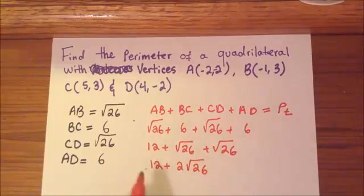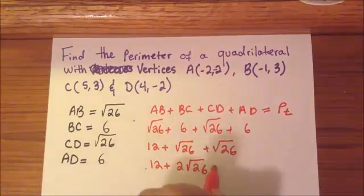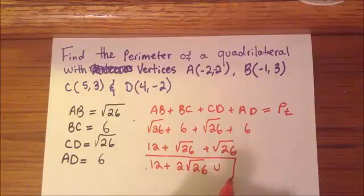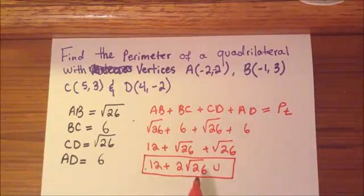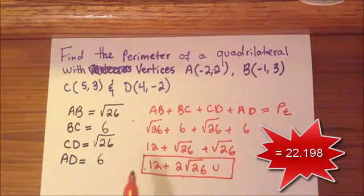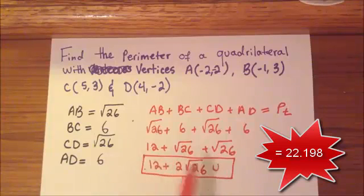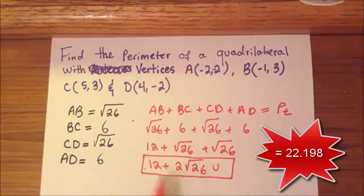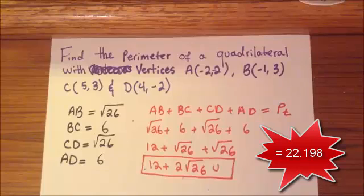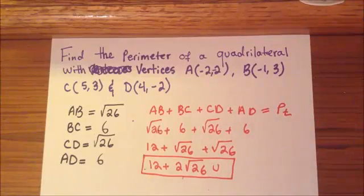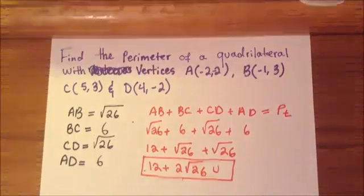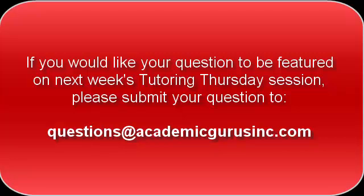Since there are no units given in the problem, I'll write U for units. So the final answer is 12 plus 2√26 U. You could simplify further by plugging 26 into your calculator, taking the square root, multiplying by 2, and adding 12. Make sure you write U for units — some teachers mark you off if you miss it. Thank you for tuning into our Tutoring Thursday channel. If you enjoyed this video and found it helpful, please give us a thumbs up, comment, and subscribe. Until next week's Tutoring Thursday, happy studying.